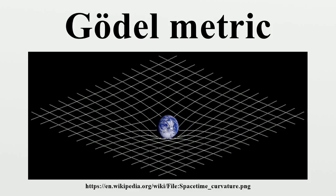Notice that the cosmological constant is carefully chosen to partially cancel the matter density of the dust. The Gödel spacetime is a rare example of a regular solution of the Einstein field equations. Gödel's original chart is geodesically complete and singularity free. Therefore, it is a global chart, and the spacetime is homeomorphic to R4, and therefore simply connected.